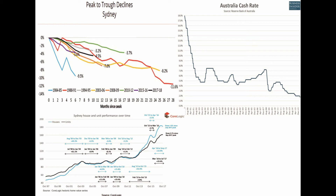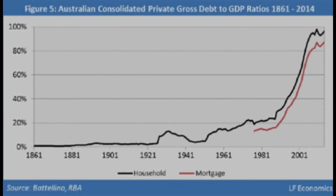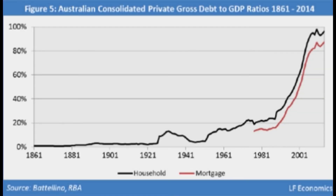Since then, Sydney house prices have declined roughly 12 percent. We now know that rising interest rates will eventually lead to property prices flattening or declining, while interest rate cuts lead to an increase in property prices after some time. We can clearly see that interest rates were falling in the long run from around 18 percent in 1988 to 1.5 percent now, and this decline led to an increase in private debt and property prices.